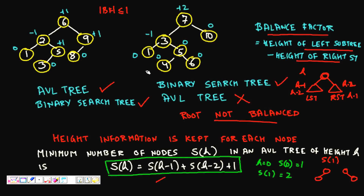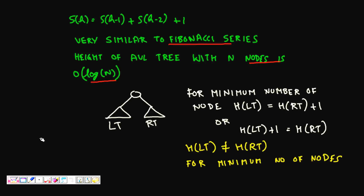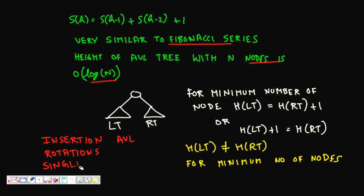That was the introduction to AVL trees — what an AVL tree is, how to check the AVL property, and how to find the minimum number of nodes in an AVL tree of height h. In the next lecture we will study insertion into AVL trees, which is similar to BST insertion but can cause the balance factor to exceed one. We will then look at rotations — single rotation and double rotation — to restore balance.